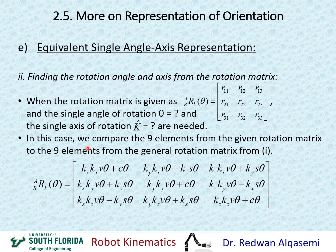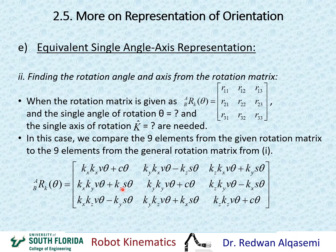As we did earlier, we compare some of the nine elements from the given rotation matrix to the nine elements from the general rotation matrix found previously. For example, we take R11 and compare it to the corresponding element, and R21 compared to its corresponding element, giving us equations. We then solve for KX, KY, KZ, and theta.